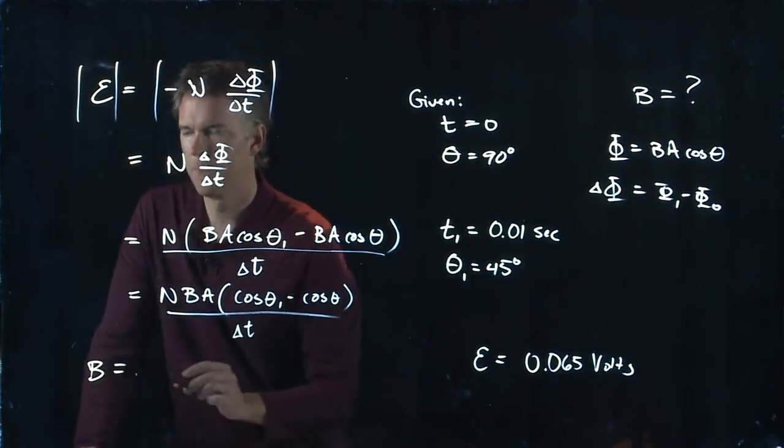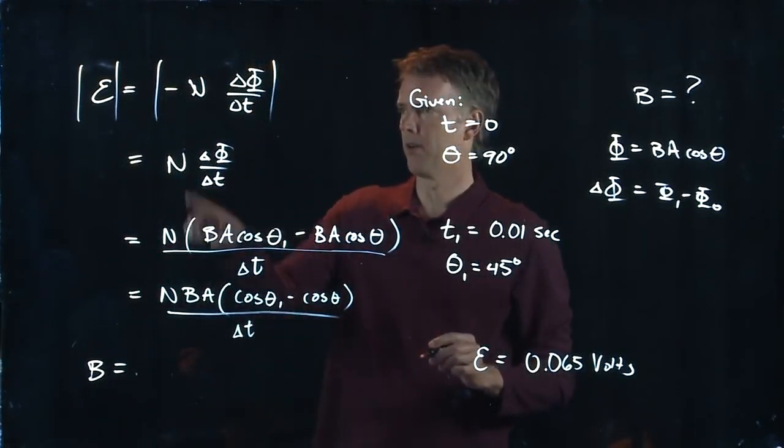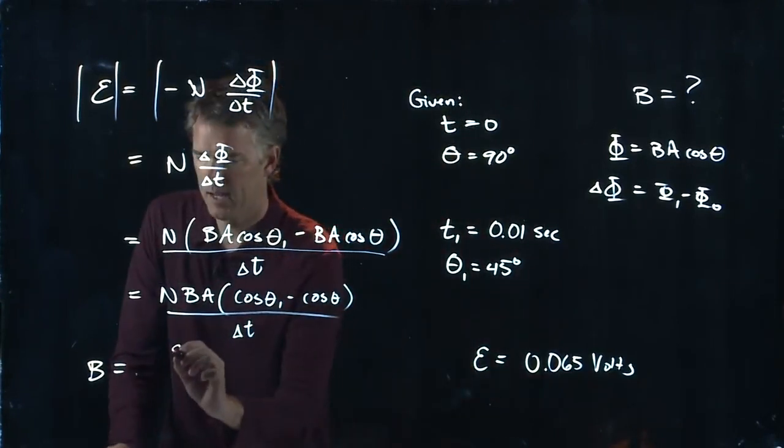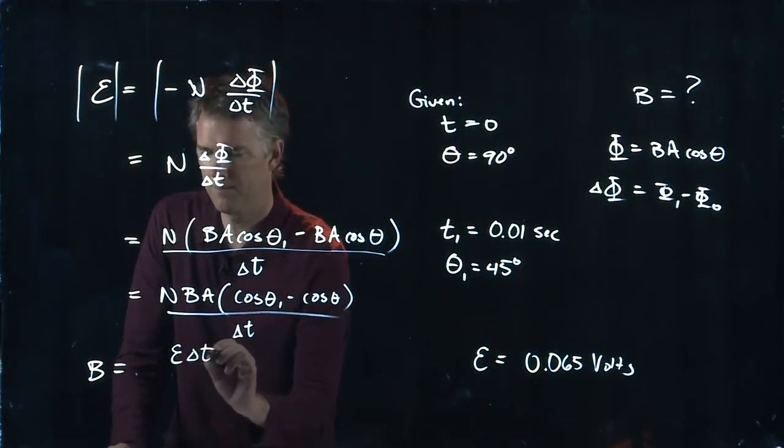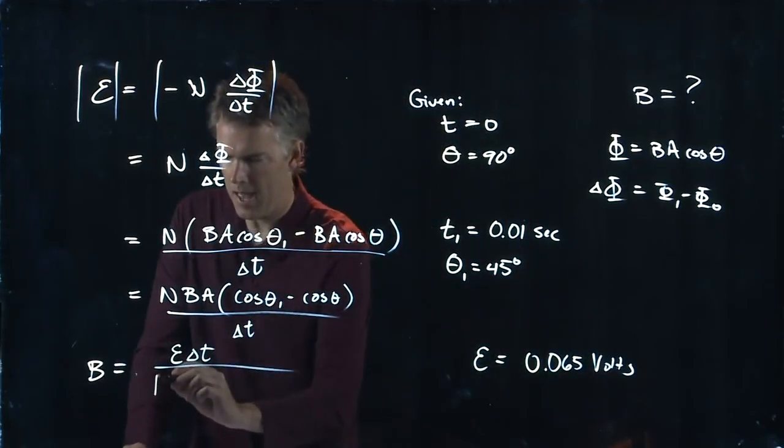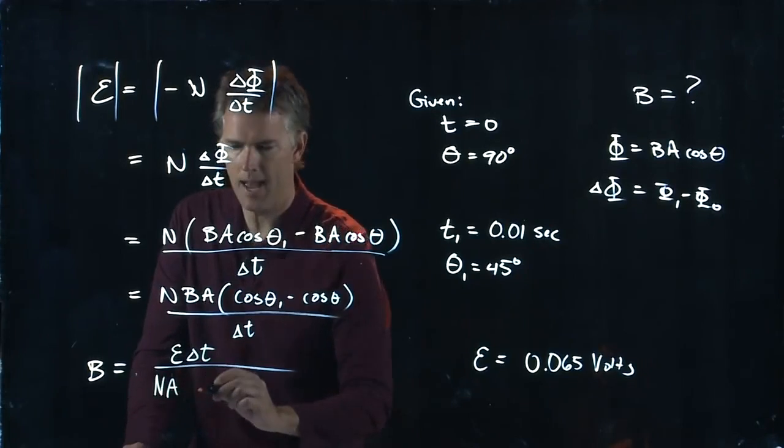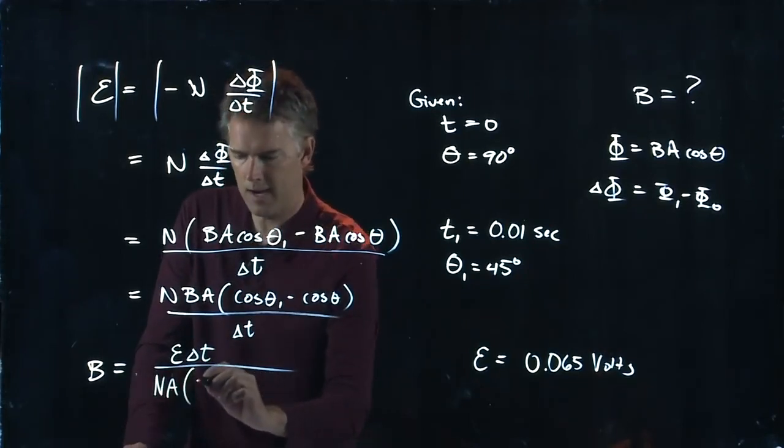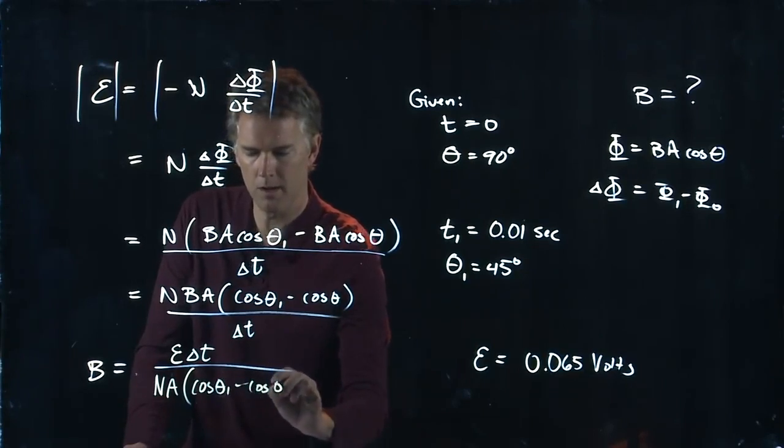What do we get? I've got to multiply across by delta t, so I get emf epsilon times delta t, and then I have to divide by N, divide by A, and divide by cosine theta one minus cosine of theta.